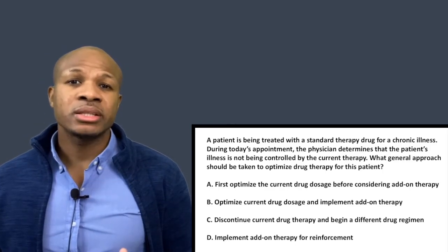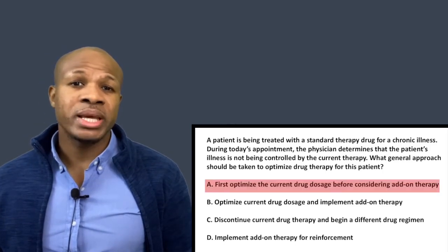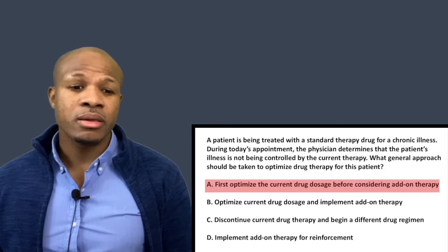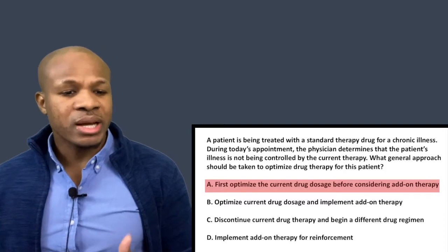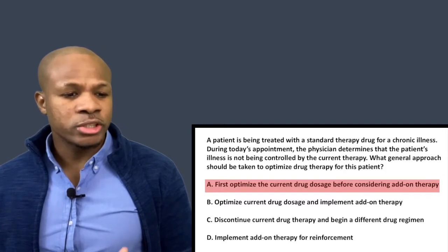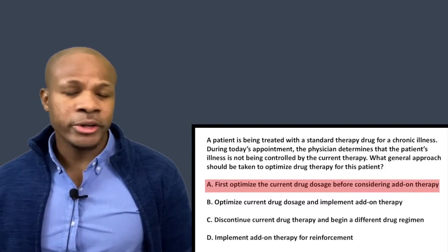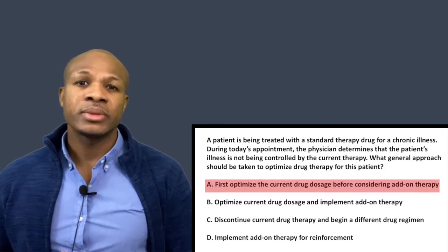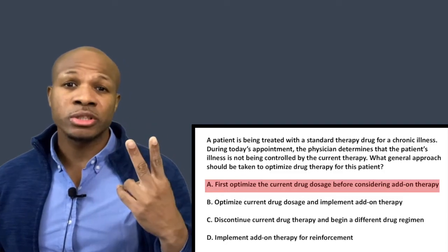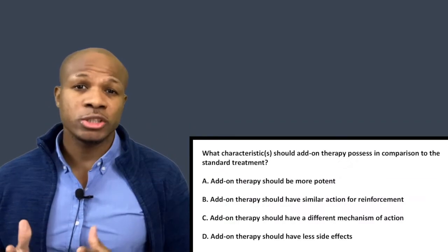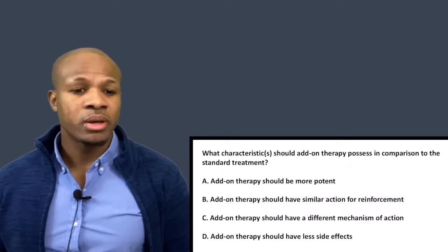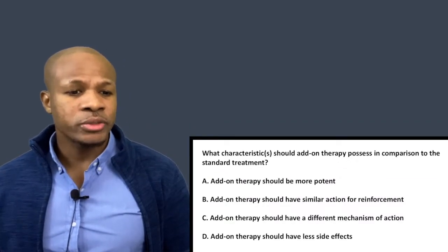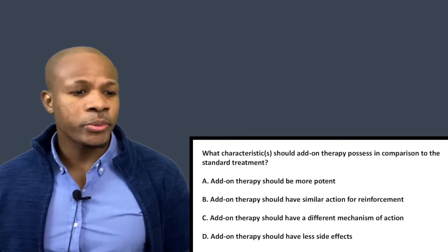You optimize the current treatment and then you add on an additional treatment. The correct answer is answer choice A: first optimize the current drug dosage before considering add-on therapy.